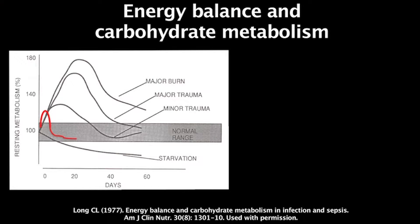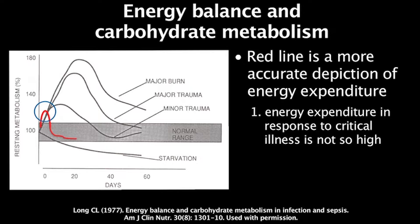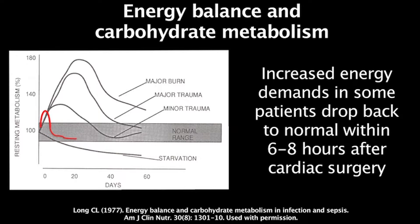It is also true that our initial assumptions of energy needs during critical illness might actually be highly exaggerated. Returning to the Long and colleagues 1977 figure, what is superimposed is a red line representing a more accurate depiction of the modern era, wherein studies have consistently found two things: first, energy expenditure in response to critical illness is not as high as previously perceived; and second, the energy response drops to normal or even below normal levels very rapidly after illness, trauma, or surgery. In some patients after cardiac surgery, increased energy demands drop to normal within six to eight hours.